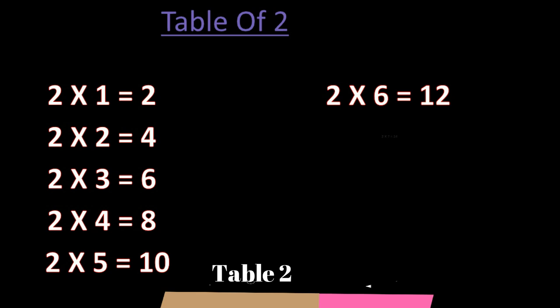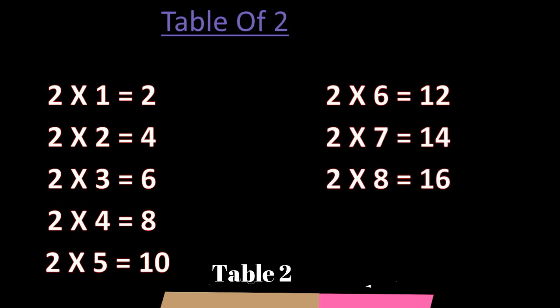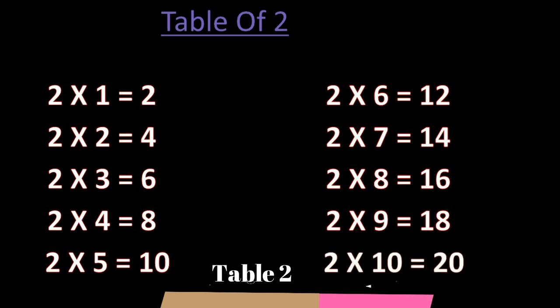2 sevens are 14. 2 eights are 16. 2 nines are 18. 2 tens are 20.